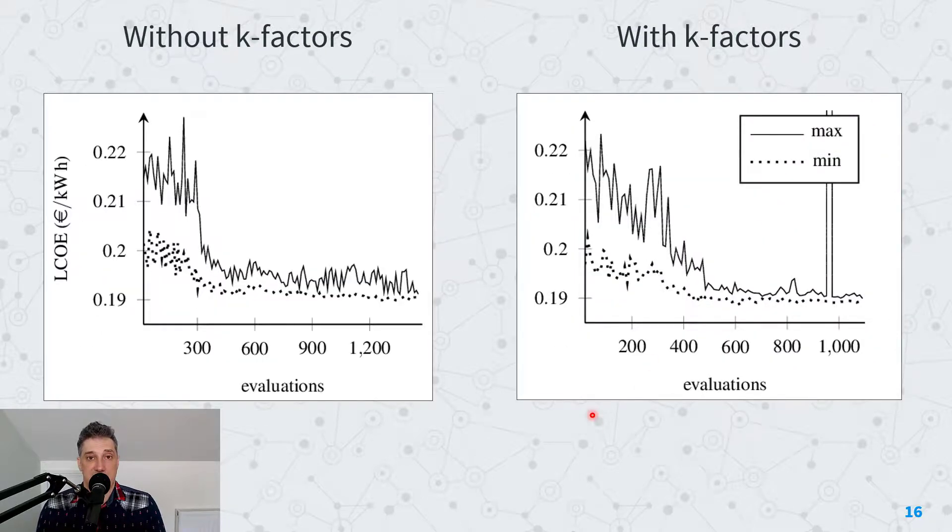We also noticed that it improved the performance of the optimizer. If we look on the left hand side without the k-factors, we see that the optimizer required 1400 evaluations and probably didn't perform too well after 600 evaluations. It struggled a bit to converge.